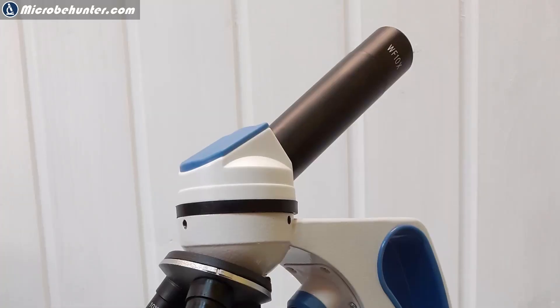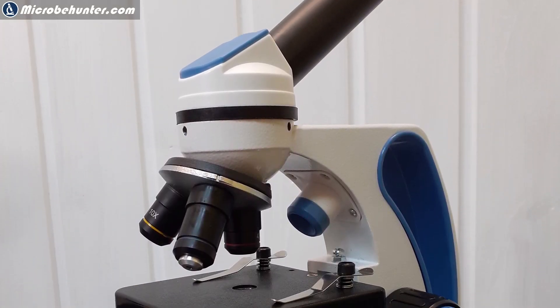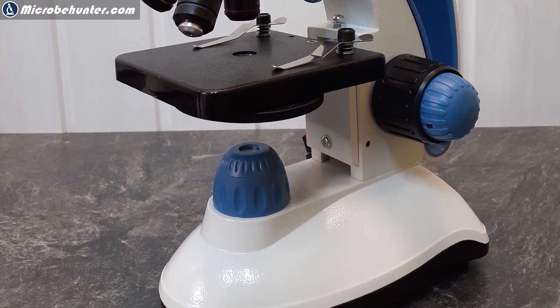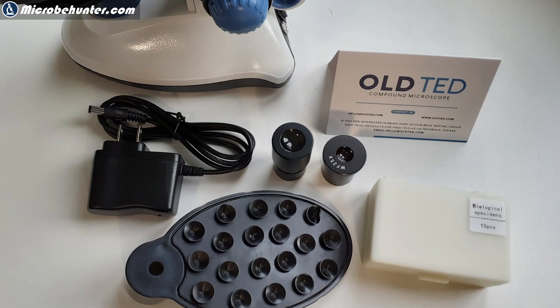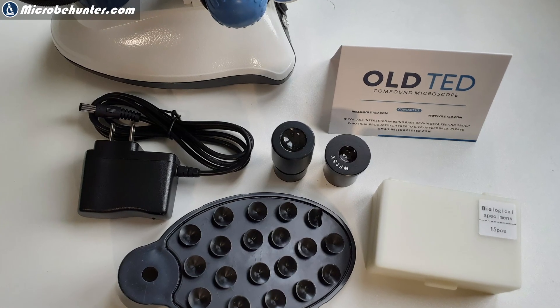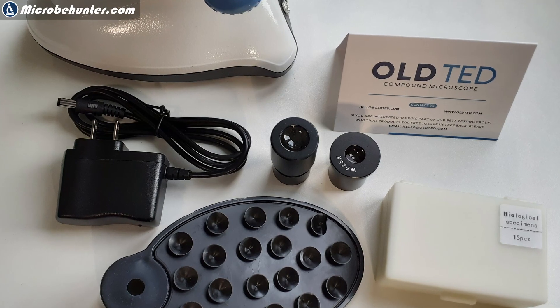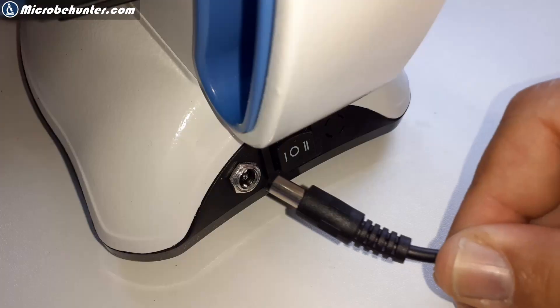The microscope is made mostly of metal. Of course, there are a few plastic parts. And I think it's a good microscope for children, but also for those people who really do not want to spend a lot of money and who would like to get a first taste of microscopy.